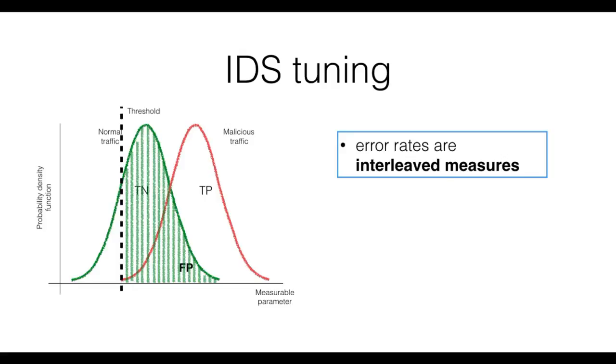First, error rates can rarely be treated separately, and they are in most cases interleaved measures. Second, you can look for parameter values that minimize both error rates. However, this is not the only option.